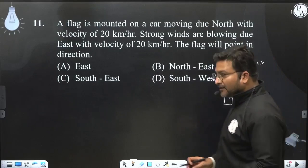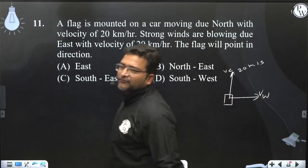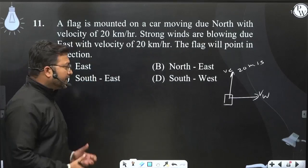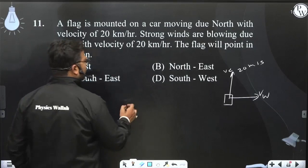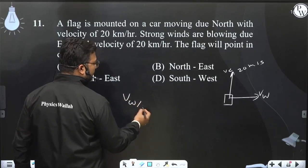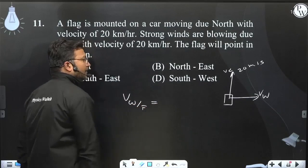The flag direction is determined by the relative velocity of the wind with respect to the car. You've got a flag, so you're going to find the velocity of the wind with respect to the flag. That's the velocity of the wind with respect to the car.